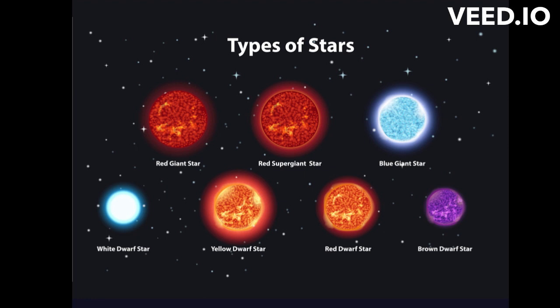Types of Stars. There are many different types of stars, ranging from small, dim stars known as brown dwarfs, to massive, bright stars known as supergiants. Some of the most common types include red dwarfs — small, cool stars that are the most common type of star in the Milky Way galaxy — and yellow dwarfs, stars like our own sun, which are of medium size and temperature.